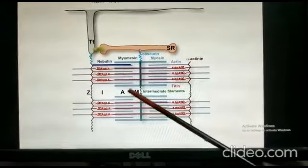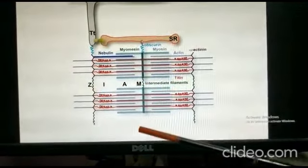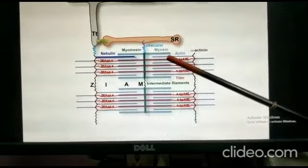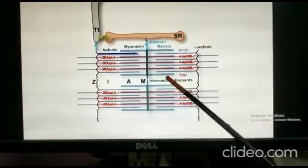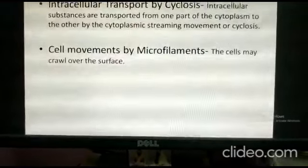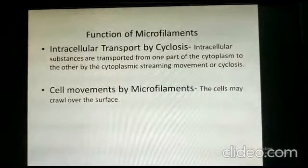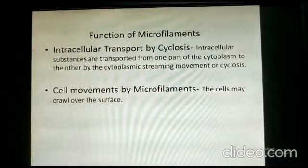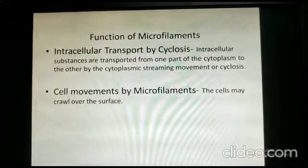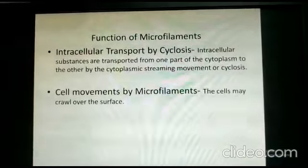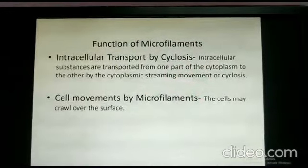The Z lines and M lines in muscle fibers are made up of intermediate filaments, not microfilaments. Actin and myosin are the microfilaments, and this process helps in muscle movement. The function of microfilaments includes intracellular transport by cyclosis — where intracellular substances are transported from one part of the cytoplasm to another by cytoplasmic streaming. Microfilaments also enable cell movement, as in the case of amoeba, where pseudopodia formation and crawling are driven by microfilaments.